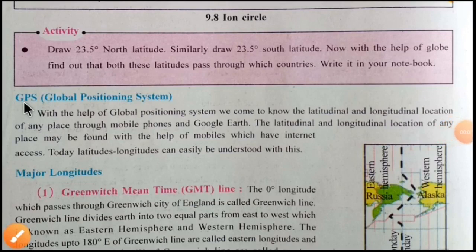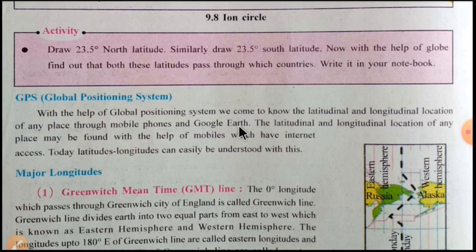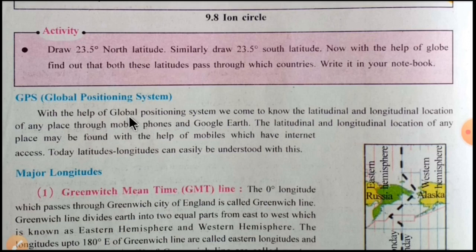Next topic is GPS — Global Positioning System. With the help of the Global Positioning System, we can know the longitudinal and latitudinal location of any place through mobile phones and Google Earth. The latitudinal and longitudinal location of any place may be found with the help of mobiles that have Internet access. In short, we can use Global Positioning System to know the latitude and longitude, and we can learn everything through the mobile phone.